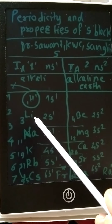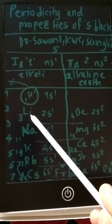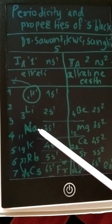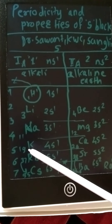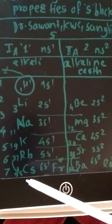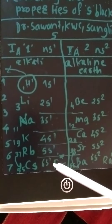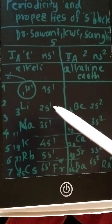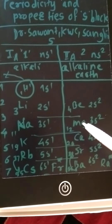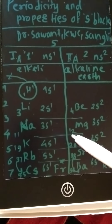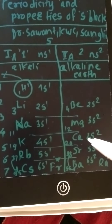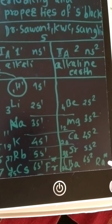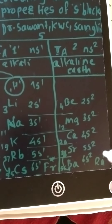The metal series starts with lithium, atomic number 3, configuration 2s1. Next is sodium, atomic number 11, configuration 3s1; potassium, 19, 4s1; rubidium, 37, 5s1; cesium, 55, 6s1; francium, 87, 7s1 — francium being radioactive. In Group 2, it starts with beryllium, atomic number 4, 2s2; magnesium, 12, 3s2; calcium, 20, 4s2; strontium, 38, 5s2; barium, 56, 6s2; and radium in the seventh period, which is also radioactive.